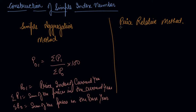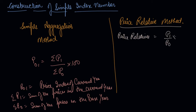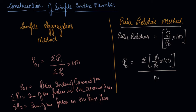In the price relative method, you first find out the price relatives of all the goods, which is the price of the current year divided by the price of the base year into 100. Then to find the price index of the current year, you add all the price relatives and divide by N, the number of goods.